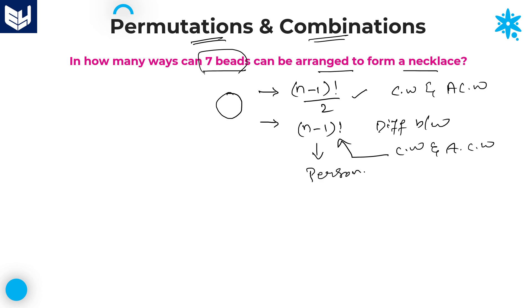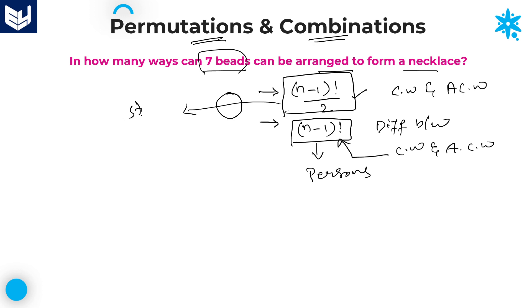Whenever we are arranging persons around a circular table, we use (n minus 1) factorial. But whenever we are arranging stones, beads in a necklace, or flowers around a garland, all those examples use (n minus 1) factorial divided by 2, because there is no difference between clockwise and anti-clockwise direction.